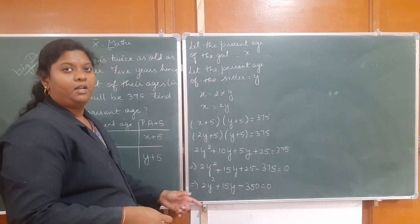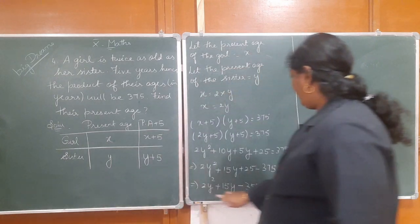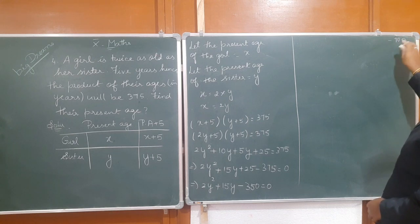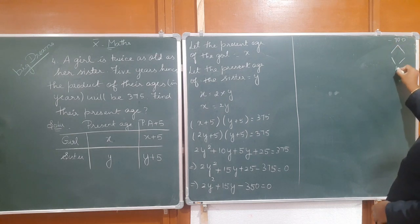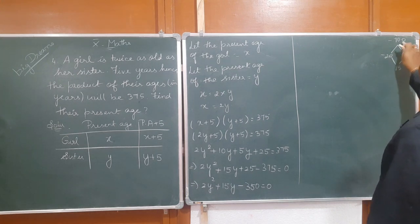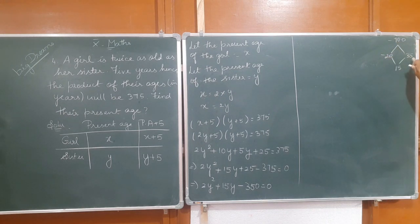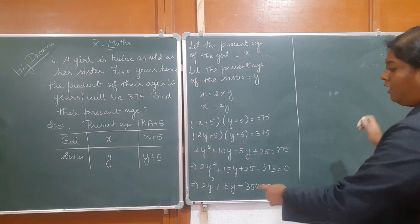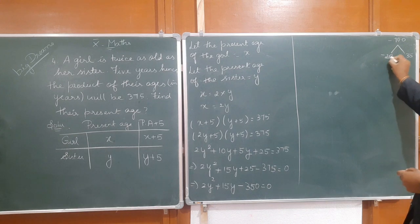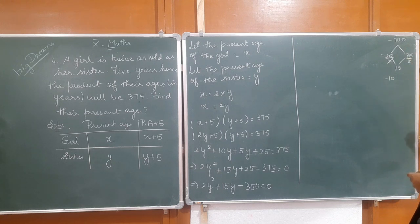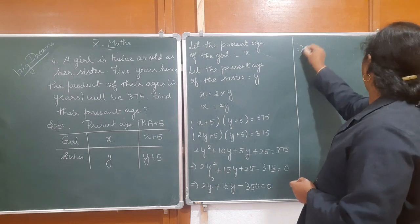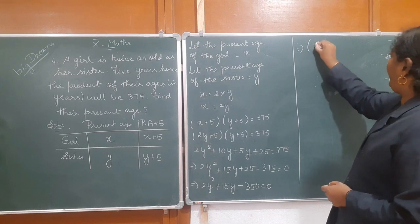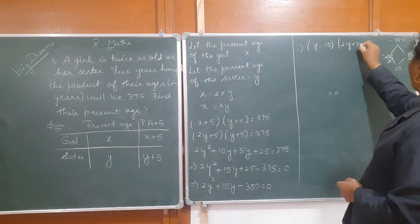Now we solve using the splitting method. We need two numbers where multiplication gives 2 times minus 350, which is minus 700, and addition gives 15. Those numbers are minus 20 and plus 35. So we split: 2y squared minus 20y plus 35y minus 350 equals 0. Factoring: y minus 10, times 2y plus 35, is equal to 0.